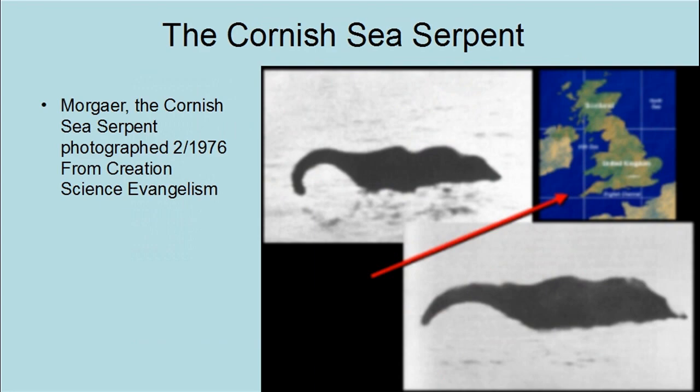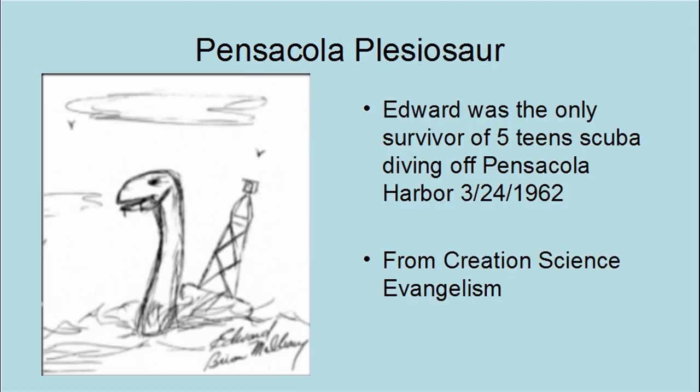A creature called the Cornish Sea Serpent has been seen in the English Channel — this picture was taken in 1976. In 1962, five teenagers from Pensacola, Florida, decided to go scuba diving out to a sunken ship about two miles off the coast. Edward Brian McCleary was the only survivor. He described the creature: 'The neck was about twelve feet long, brownish green, and smooth looking. The head was like that of a sea turtle, except more elongated and with teeth. There appeared to be what looked like a dorsal fin when it dove under for the last time. The eyes were green with oval pupils.' His four friends appeared to have been eaten. He finally made it to the top of the ship, stayed there most of the night, and early that morning swam ashore where he was found by the rescue unit.